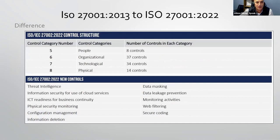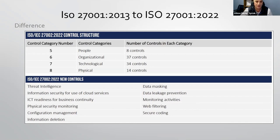In the new 2022 category structure, controls are organized as: organizational — 37 controls, technological — 34 controls, people — 8 controls, and physical — 14 controls. The 11 new controls added in 2022 include: threat intelligence, information security for use of cloud services, ICT readiness for business continuity, physical security monitoring, configuration management, information deletion, data masking, data leakage prevention, monitoring activities, web filtering, and secure coding.